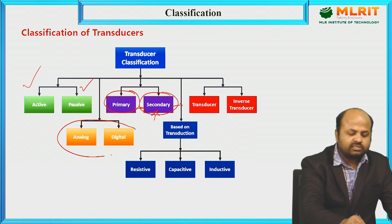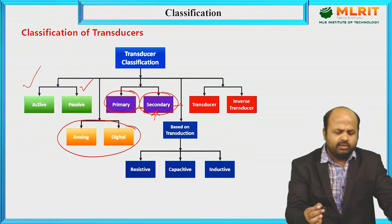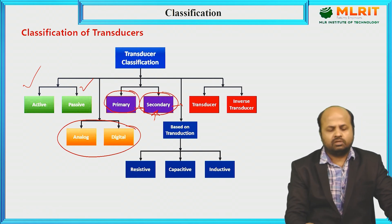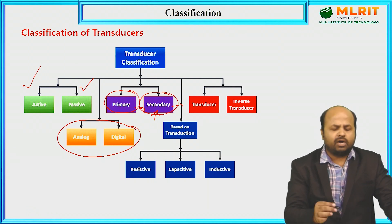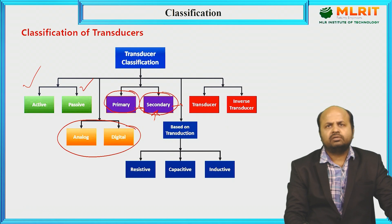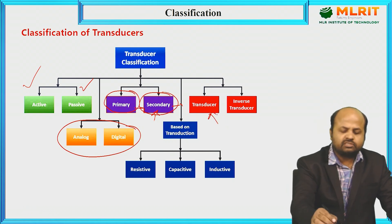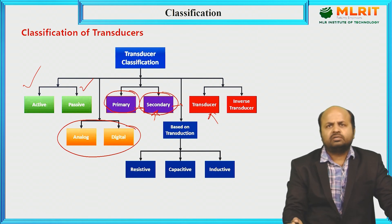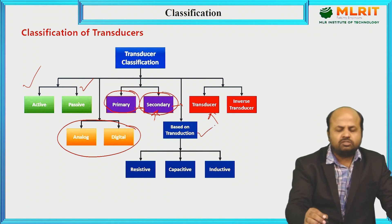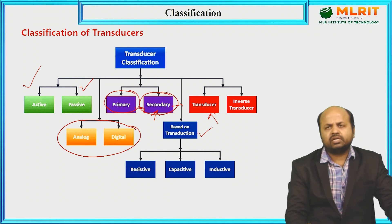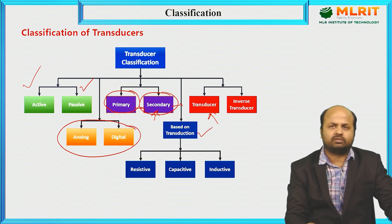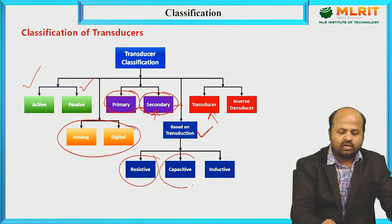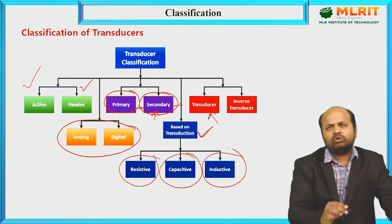Another classification is analog transducer and digital transducer. If the output of a transducer is analog in nature, it is called an analog transducer; if the output is digital data, it is called a digital transducer. There is also transducer versus inverse transducer — a transducer converts physical to electrical, and an inverse transducer does the opposite. Based on the transduction element, a transducer may be resistive, capacitive, or inductive type.